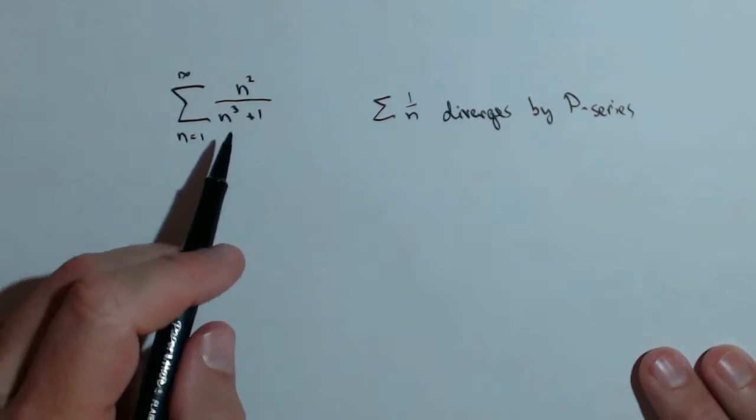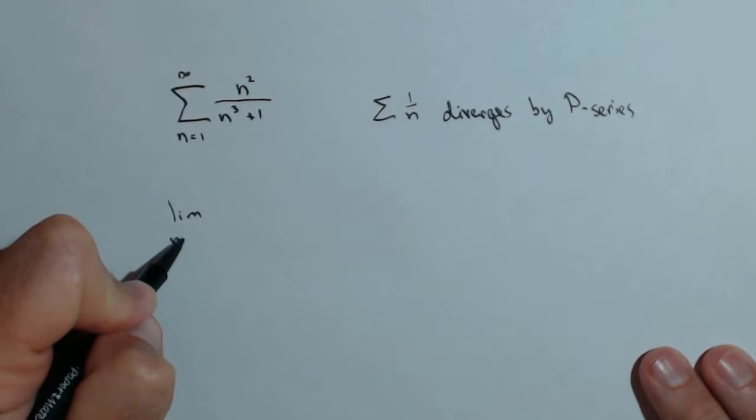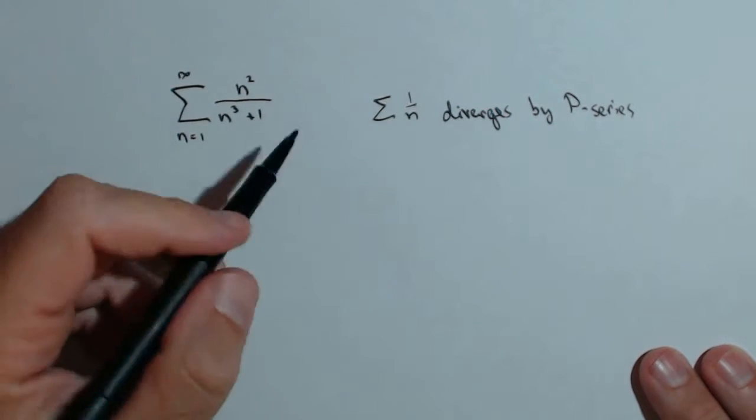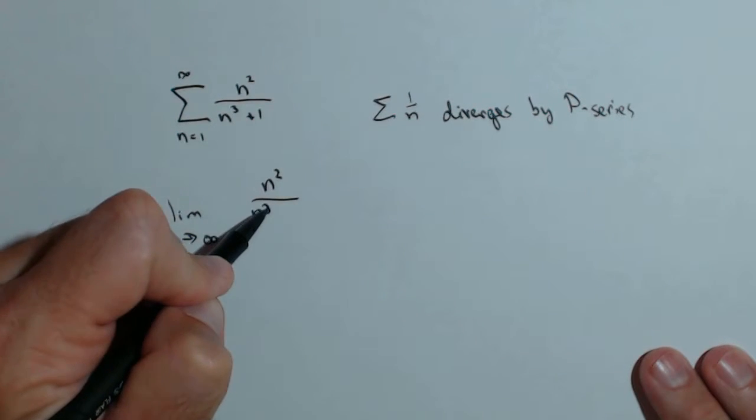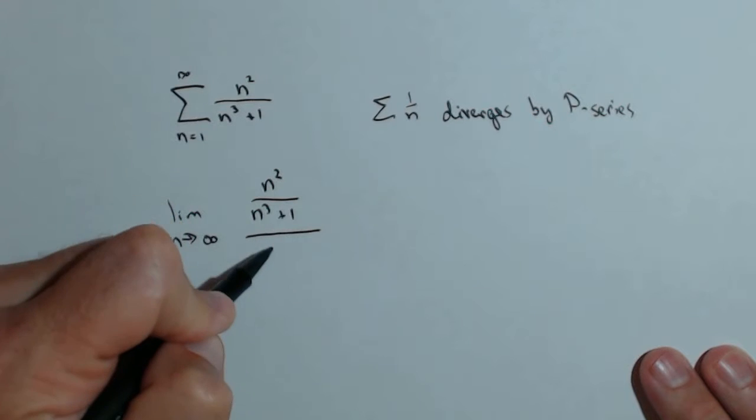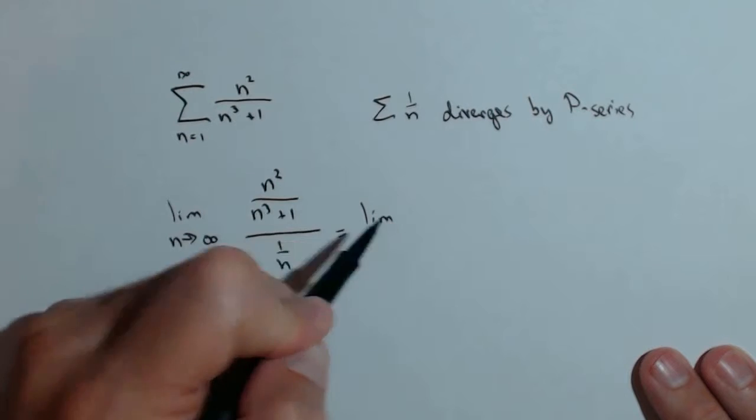So what we're going to do is we're going to do a limit comparison test. We're going to take the limit as n goes to infinity, and you can put either one on top you want, n squared over n cubed plus 1 over 1 over n. And this guy's going to get flipped, and we're going to multiply it.